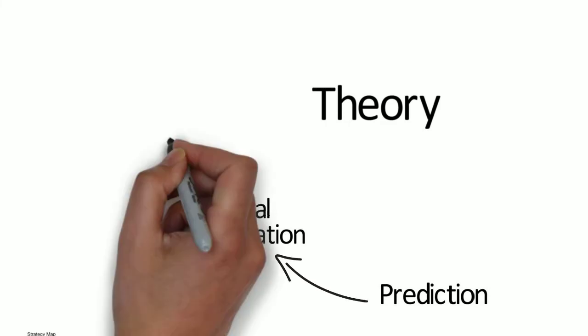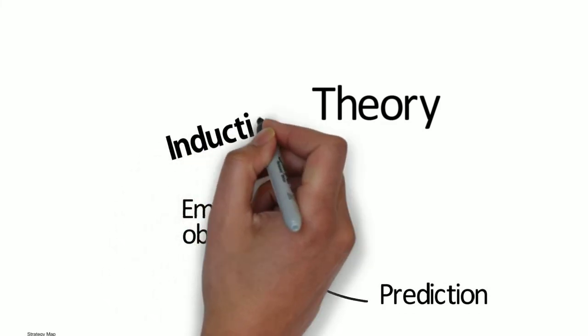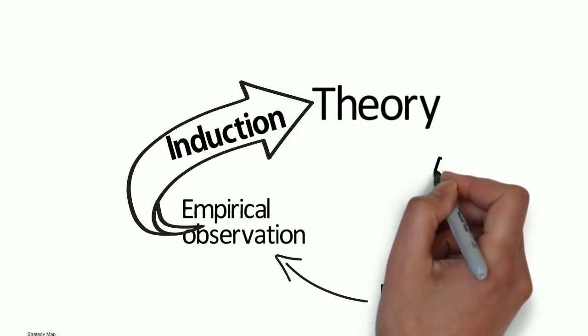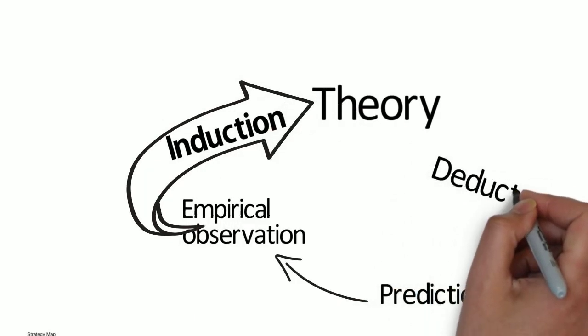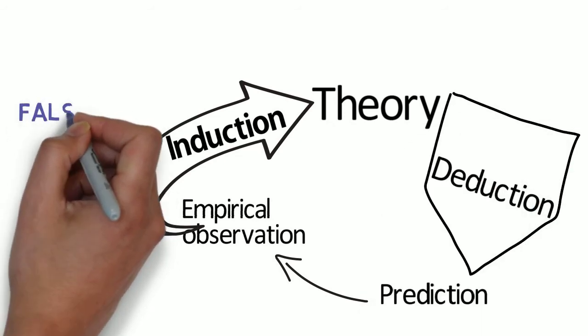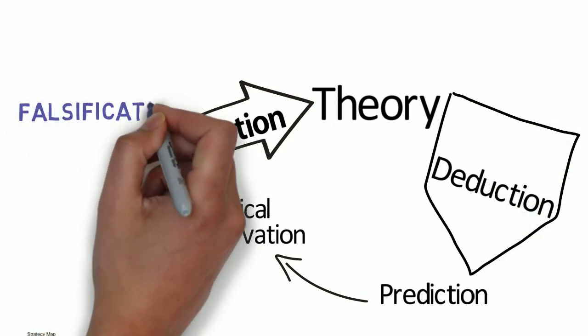Some important terms in the scientific method are induction, where we take observations and try to develop more general theories. Deduction, where we take general theories and use them to make specific predictions. And falsification, which is how theories are tested.